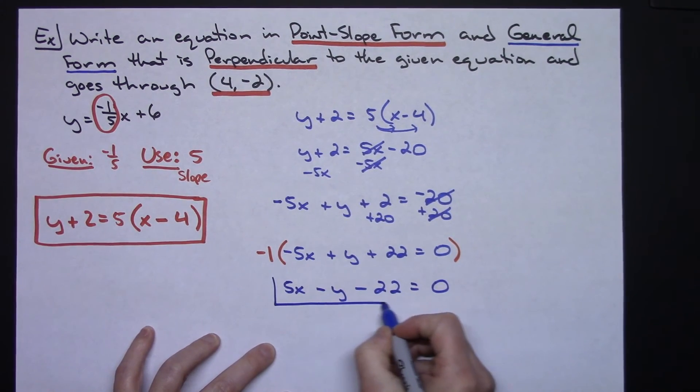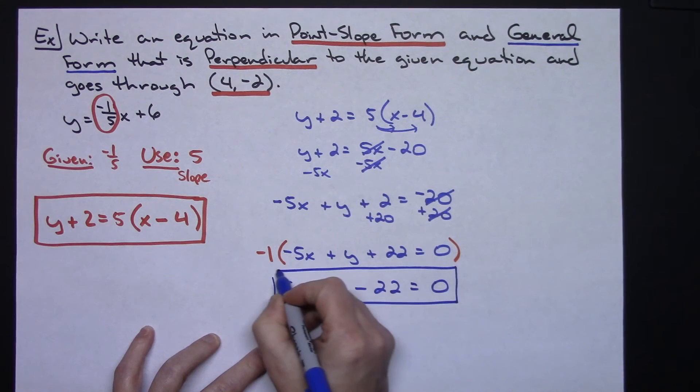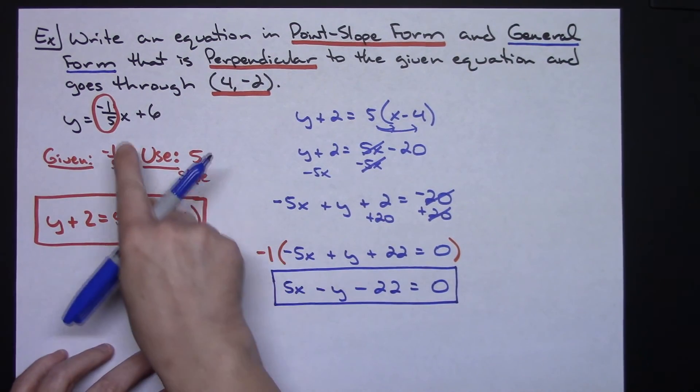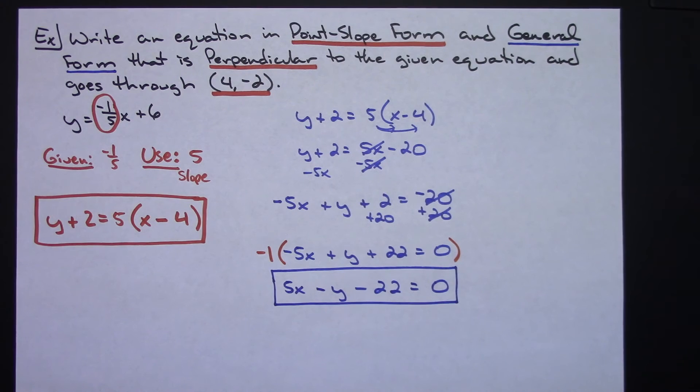And then there I have my general form of the line that is perpendicular to the given equation and goes through (4, -2).